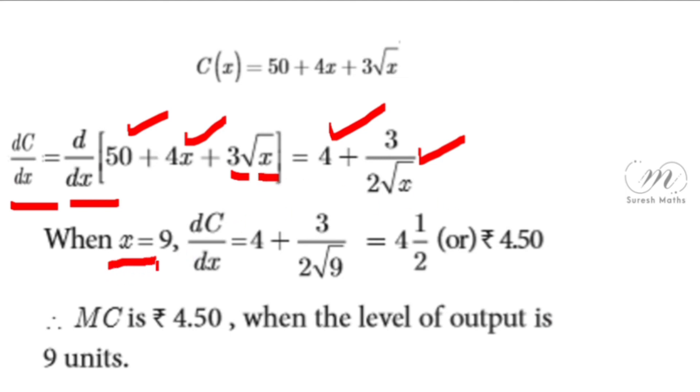When x = 9, we have 9 units production. So MC = dC/dx = 4 + 3/(2√x). Now we put x = 9. √9 is 3.